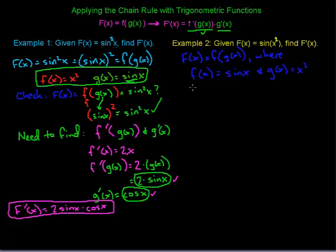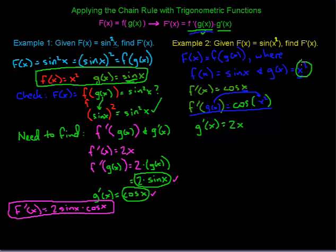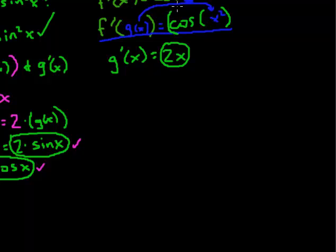We want to find f prime. Since f of x is sine of x, f prime of x is cosine of x. So f prime of g of x is equal to cosine of g of x. Instead of x we put g of x, and g of x is x squared, so this gives us cosine of x squared — that's the first part of the chain rule. The last piece is g prime of x. Since g of x is x squared, g prime of x is 2x.